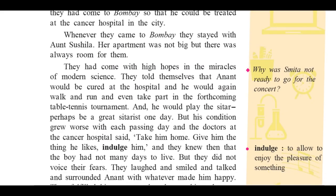Whenever they came to Bombay, they stayed with Aunt Sushila. Her apartment was not big, but there was always room for them. In Bombay, they did not have their own house. Aunt Sushila is another character — the fifth character. Four members of the family: Anant the boy, Smita the girl, mother, and father — plus Aunt Sushila. They used to stay there for the treatment of Anant's cancer.